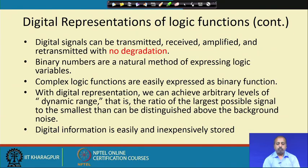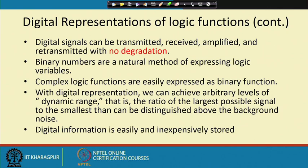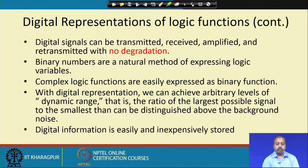Binary numbers are a natural method for expressing logic variables, and complex logic functions can be easily expressed as binary functions. We can achieve arbitrary levels of dynamic range — that is, the ratio of the largest to the smallest distinguishable signal above the background noise. Whenever you are transmitting a signal, there is always some amount of noise that gets added into the system. If transmitting an analog signal of say 12 volt, due to noise it might become 7 volt.